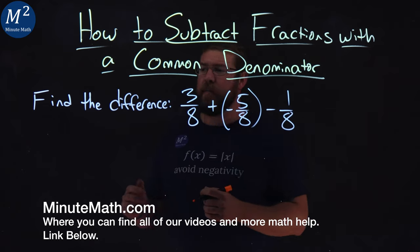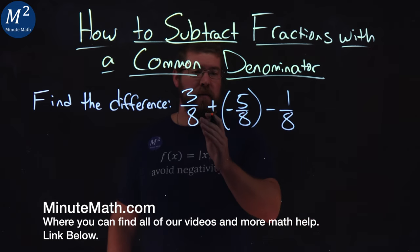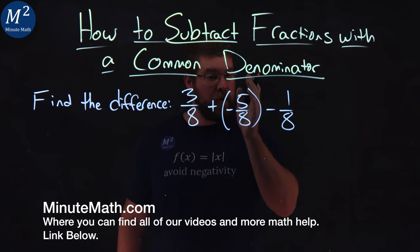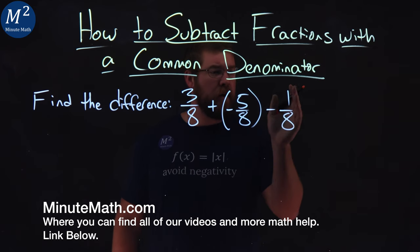We're given this problem: finding the difference of 3 over 8 plus, in parentheses, negative 5 over 8, minus 1 over 8.